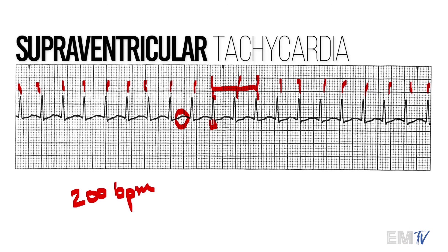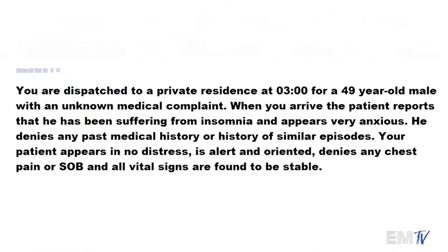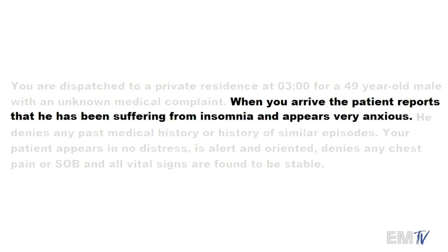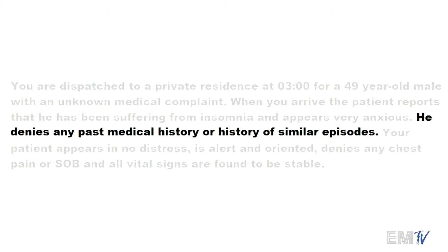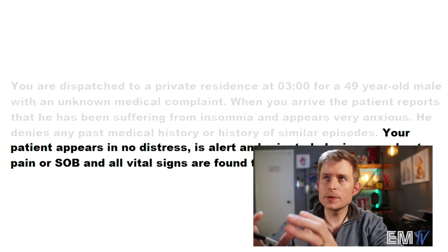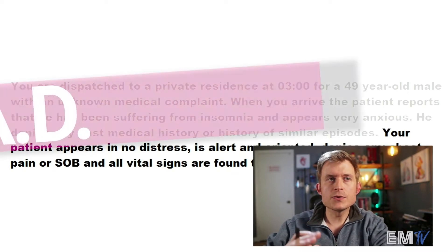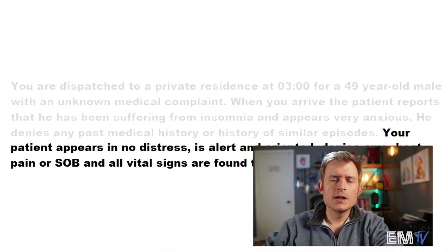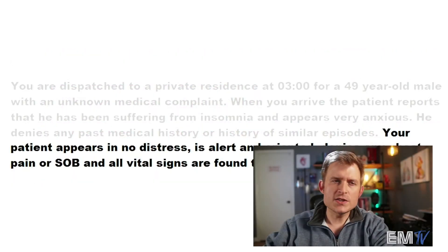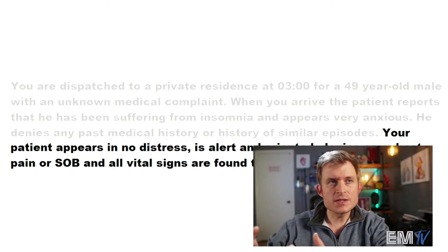Let's take a look at the scenario and see if we can determine whether this is a stable versus an unstable SVT. We're going out for a 49-year-old male, unknown medical complaint. When we arrive, he appears to be very anxious and suffering from insomnia. He denies any past medical history or history of similar. He appears in no distress, is alert and oriented, denies any chest pain or shortness of breath, and all vital signs are found to be stable. When determining whether my patient is stable or unstable, I'll use the CHAD criteria — which stands for Cardiac insufficiency, Hypotension, Alteration of mental status, or Dyspnea. Based on the CHAD criteria, my patient is not exhibiting any of these signs or symptoms, so I would diagnose this patient as being in a stable SVT.